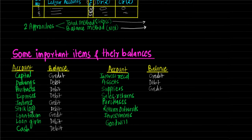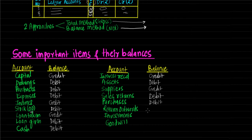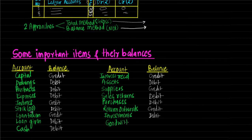Sales returns means goods we sold to a customer are being returned back to us, so goods are coming in — 'debit what comes in' — so sales returns have a debit balance. Purchases have a debit balance as we are purchasing goods from suppliers. Return outwards means purchase returns — goods going out of the business, so 'credit what goes out,' meaning return outwards has a credit balance. Investments have a debit balance because when we purchase investments they come into the business. Goodwill is an asset and assets have a debit balance.